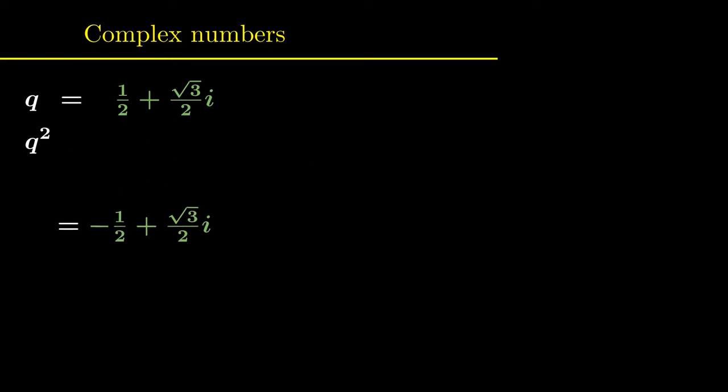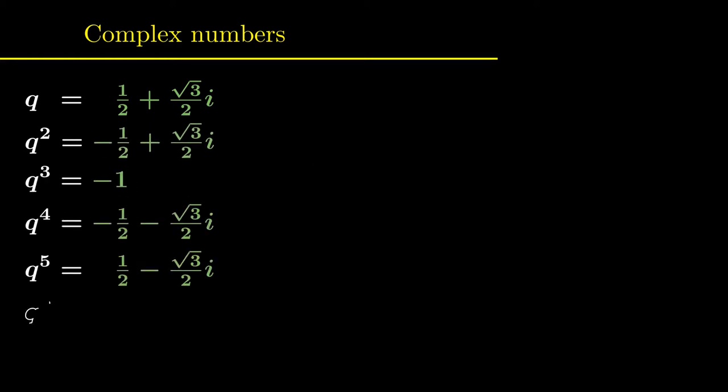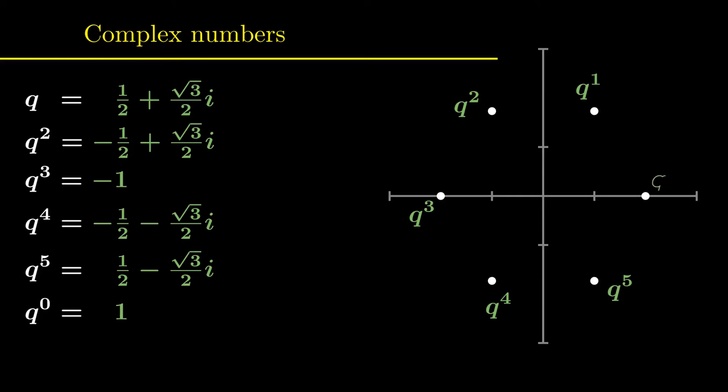This calculation is now repeated a few times to determine all the powers of q. Surprisingly, after six multiplications, we simply get 1 and the process starts over again. When plotted, the six numbers form a regular hexagon. The experts won't be surprised, of course, since we've started with the sixth root of unity. Therefore, there is a deeper reason for this result.